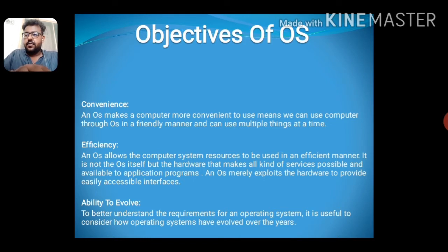To better understand the requirements for an operating system, it is useful to consider how operating systems have evolved over the years. Processor scheduling is the change of ready state to running state of a process. The CPU scheduler selects a process among the processes that are ready to execute and allocates the CPU to one of them. The short-term scheduler, also known as the dispatcher, makes the decision of which process to execute next.